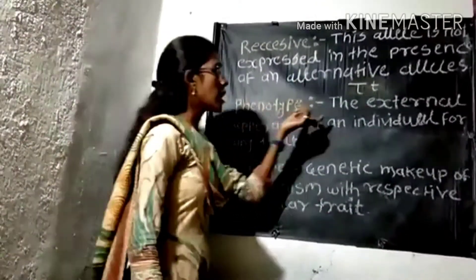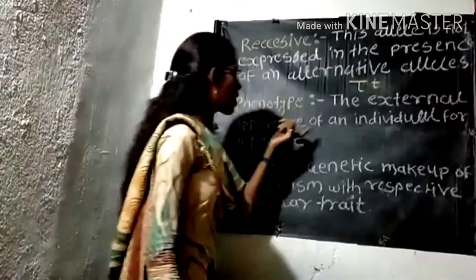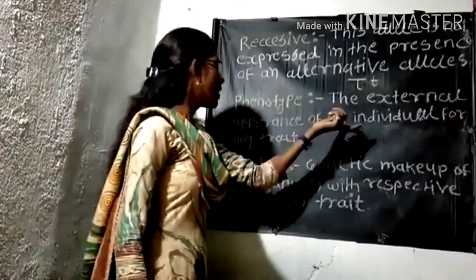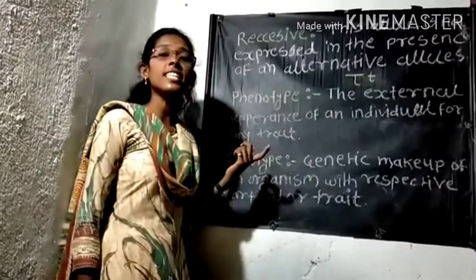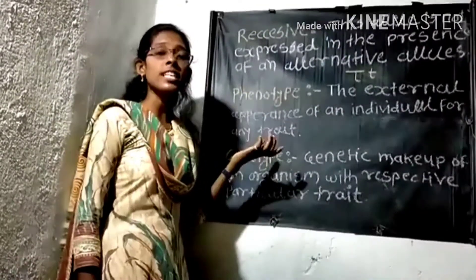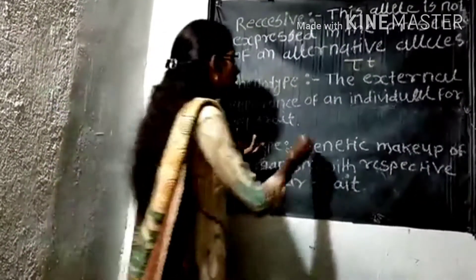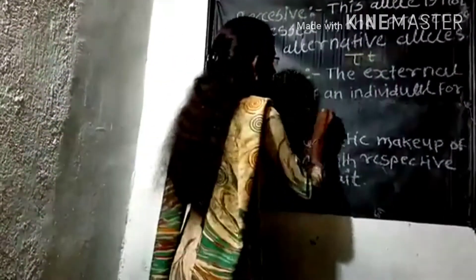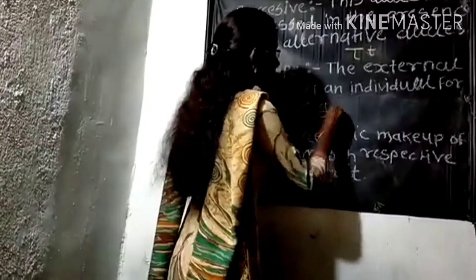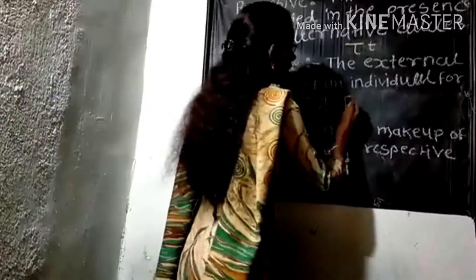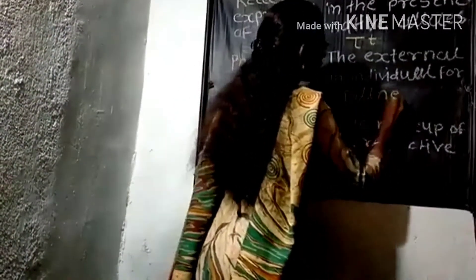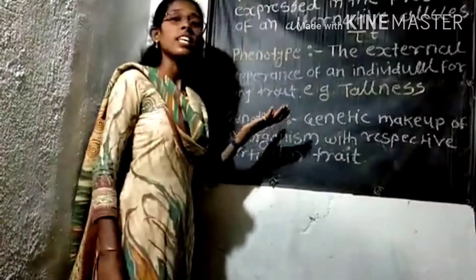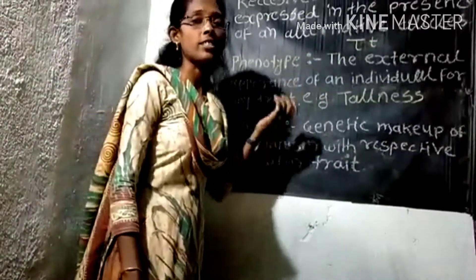The next term is 'phenotype.' Phenotype is the external appearance of an individual for any trait — which trait is expressed in the individual's external appearance. For example, tallness is the external character that you can see with your eyes.